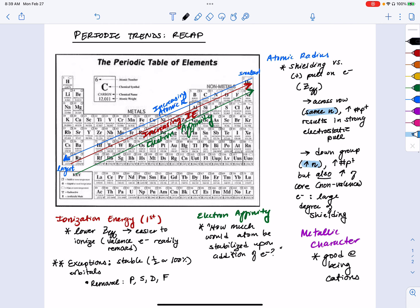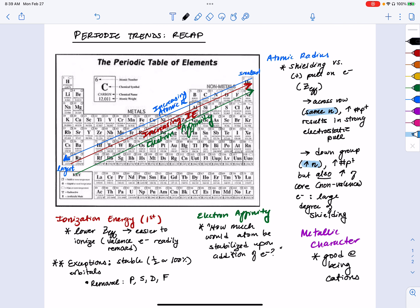So the things that are best at becoming cations are things that have a very weak pull on their valence electrons, meaning they're the things that have very low ionization energies. So down here where we have things with small ionization energies, this is where we see elements with the most metallic character. They become cations most readily.